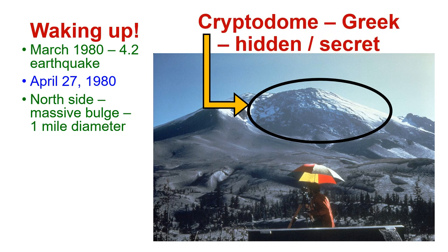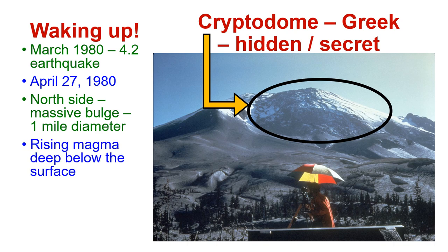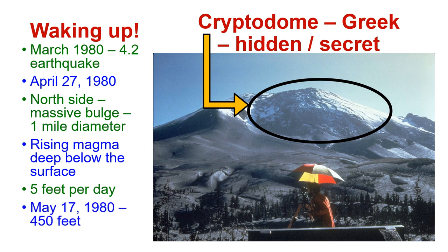It's known as a cryptodome, which is Greek for hidden or secret. What caused it was rising magma deep below the surface, pushing the igneous rock up. Scientists measured and found it to be growing at about five feet per day. And on May 17, 1980 — one day before the eruption — it was measured to be 450 feet.